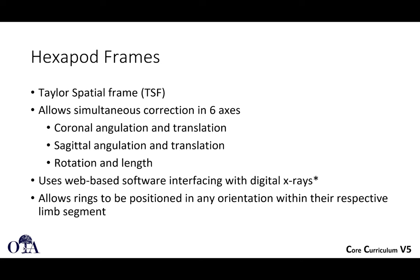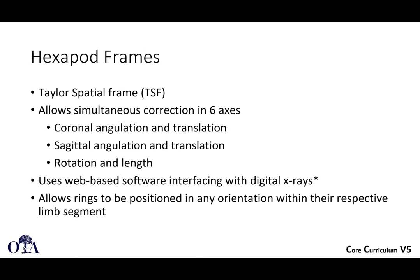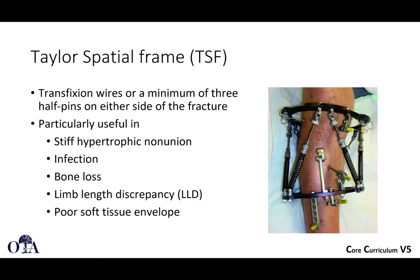A hexapod frame — an example of this is the Taylor Spatial Frame, which looks like this. It allows for simultaneous correction in six axes: coronal angulation and translation, sagittal angulation and translation, and rotation and length. It uses web-based software interfacing with digital x-rays to determine what needs to be done with each telescoping rod to achieve the desired alignment. The rings can be positioned in any orientation within their respective limb segment, and within the degrees of freedom each telescoping rod allows, it can use any reasonable starting point to achieve correction.